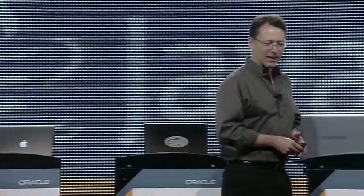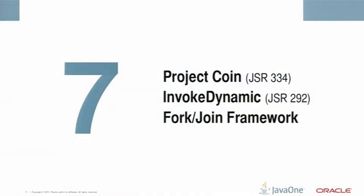There are lots of great features in Java 7. I'd like to dive into three of the big ones this morning: ProjectCoin, InvokeDynamic, and the ForkJoin framework.